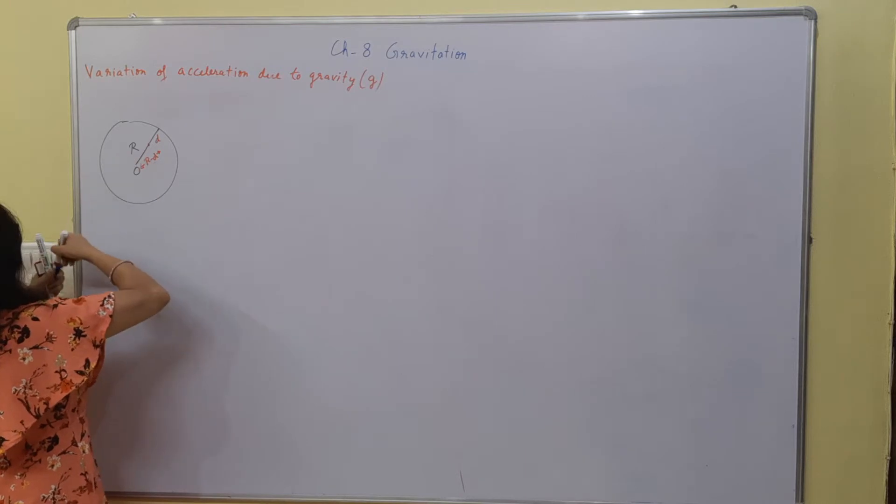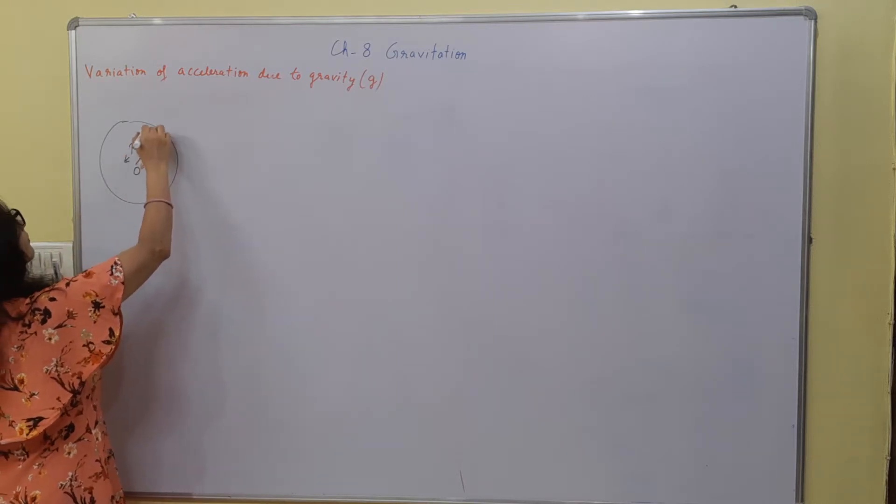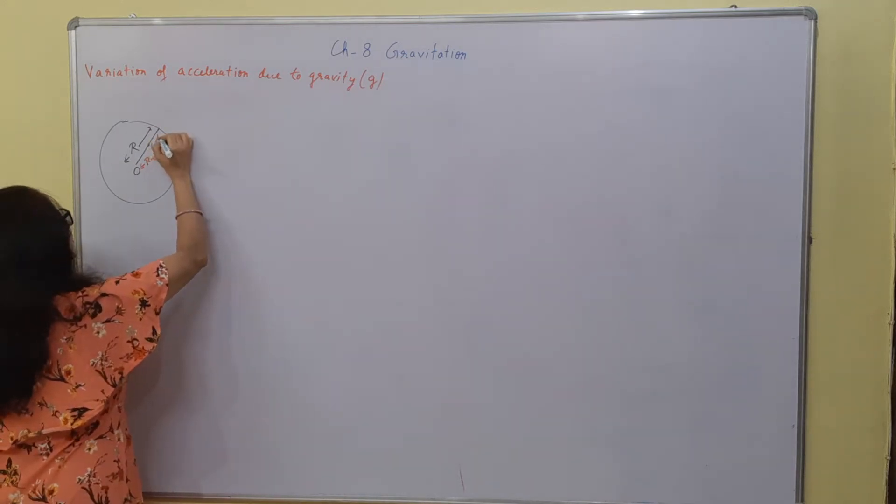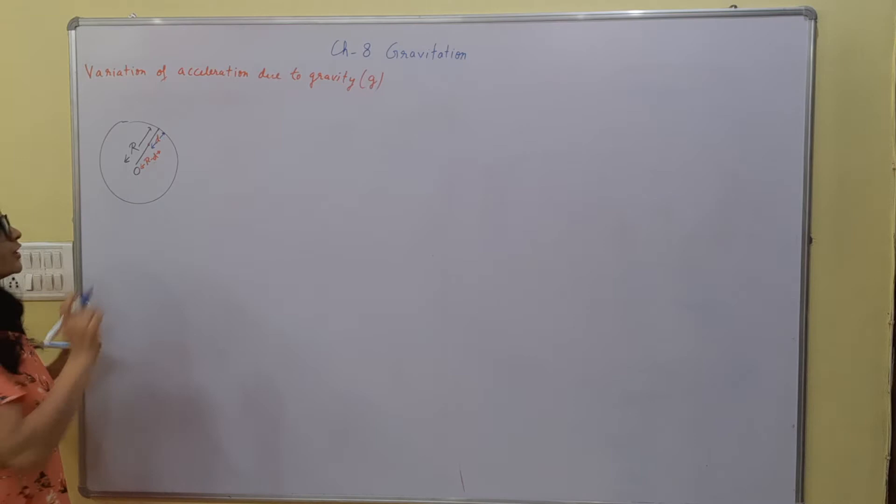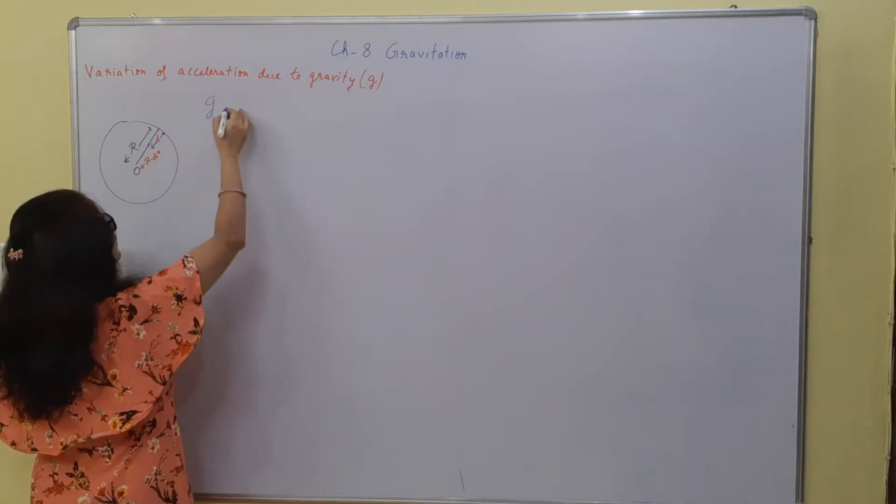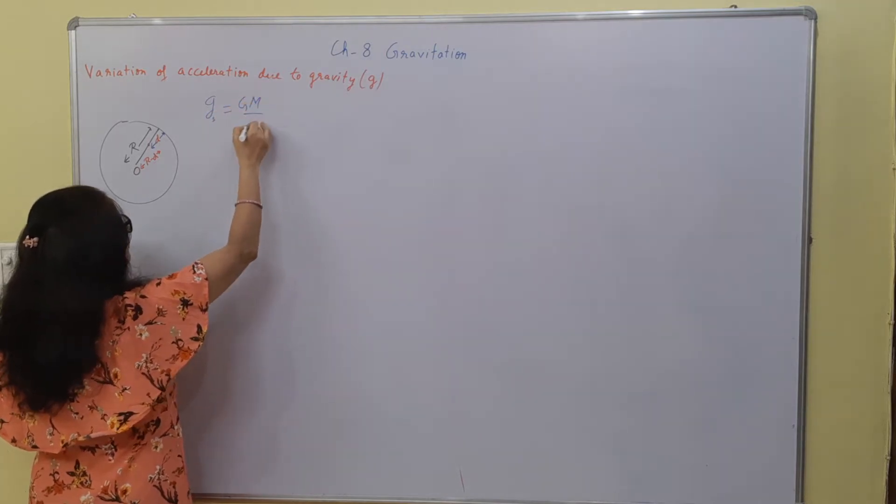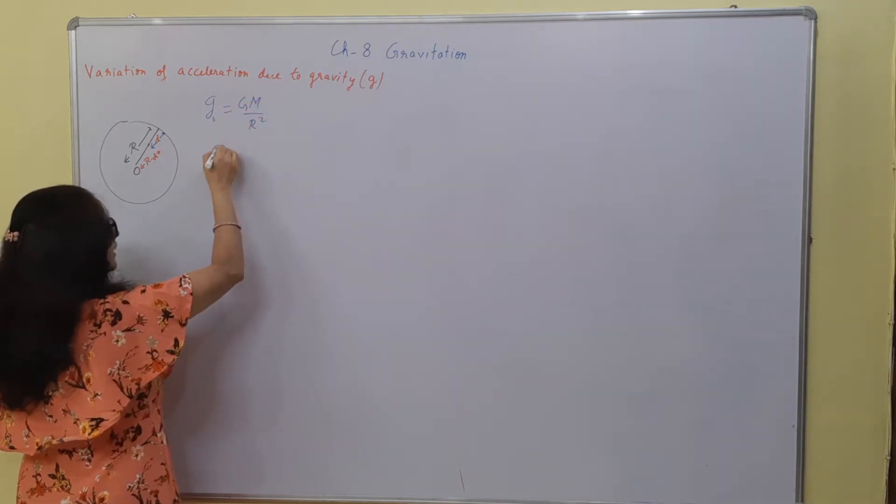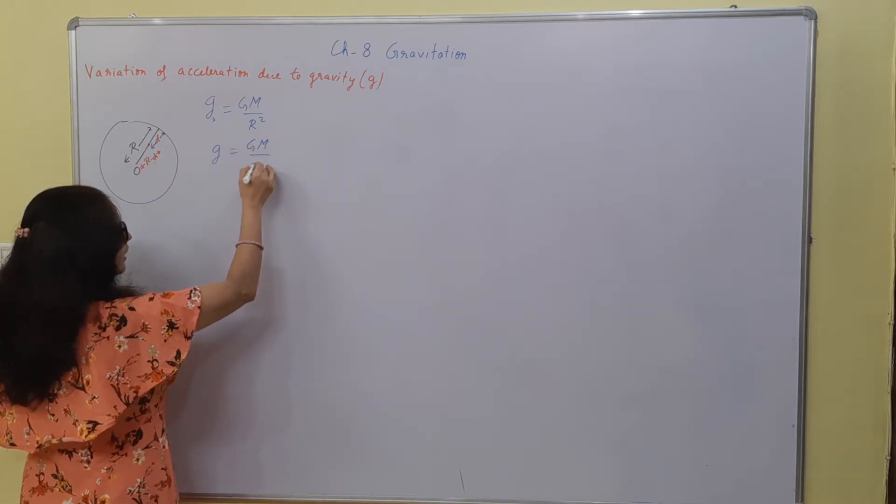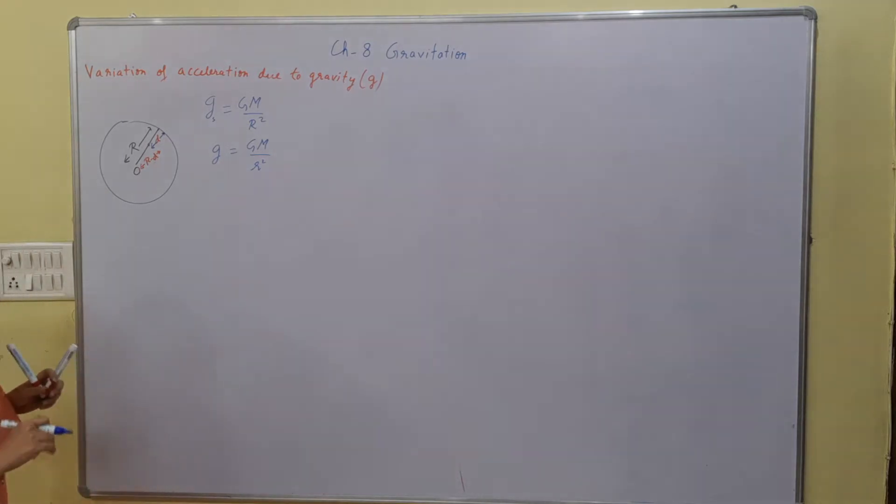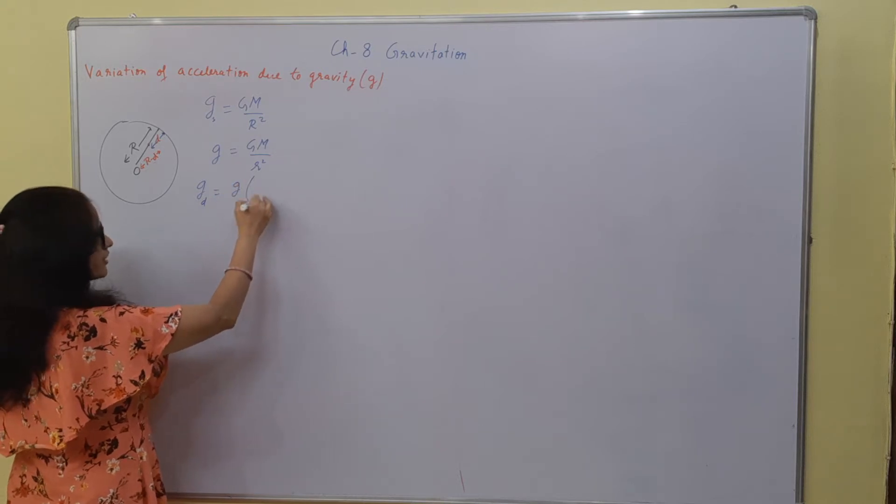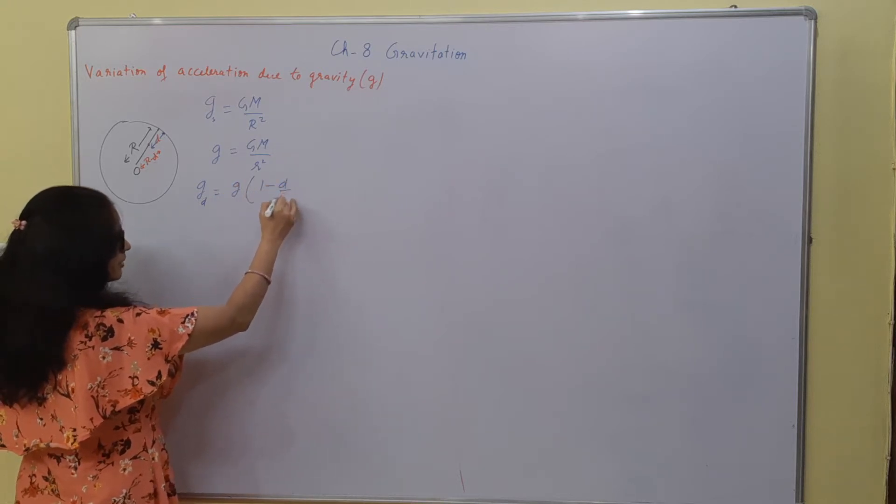This complete is r and this is depth d. We know that gravitational acceleration at the surface is GM upon r square, g at height is GM upon r square, and g at depth is g at surface into 1 minus d upon r.